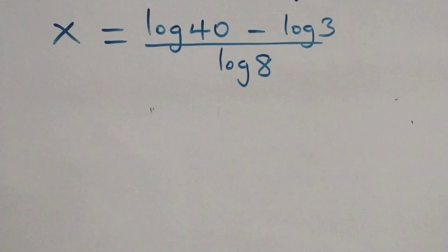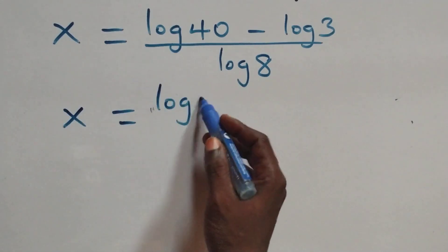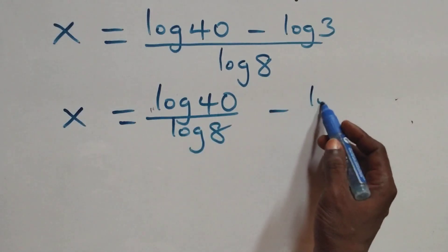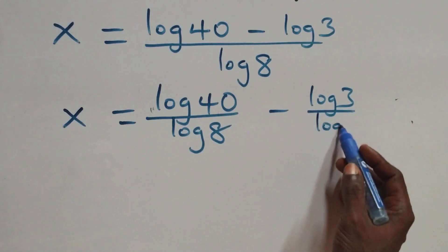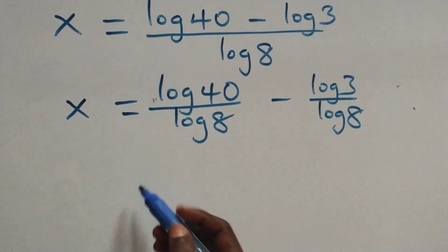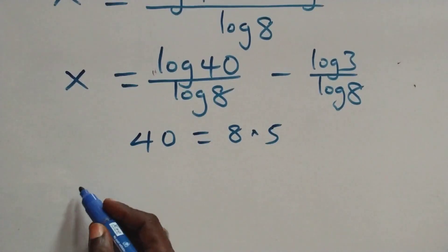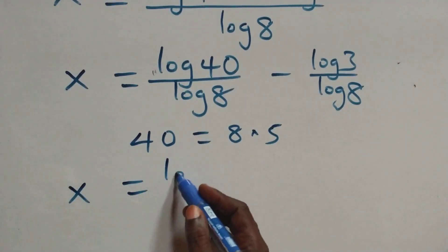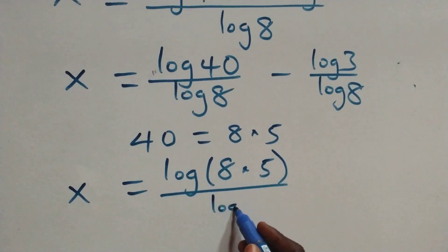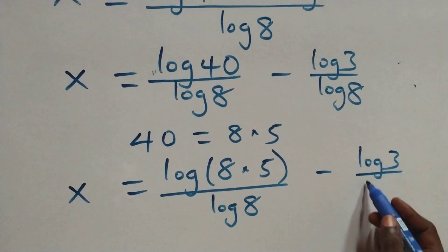Then here we can write 40 as 8 times 5. Next step: we separate this into two fractions, and we have x equals to log 40 over log 8 minus log 3 over log 8. Here we can write 40 as 8 times 5, so this becomes x equals to log 8 times 5 over log 8, minus log 3 over log 8.